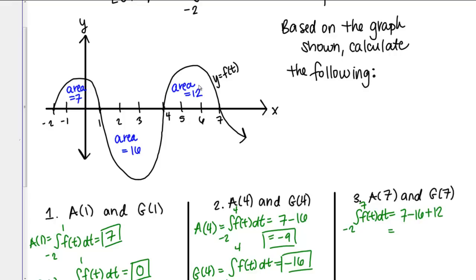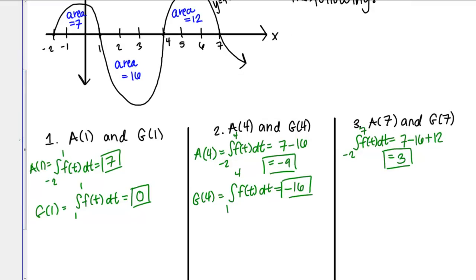If I evaluate that, I get an overall net area of 3. Then finally, let's calculate G of 7.